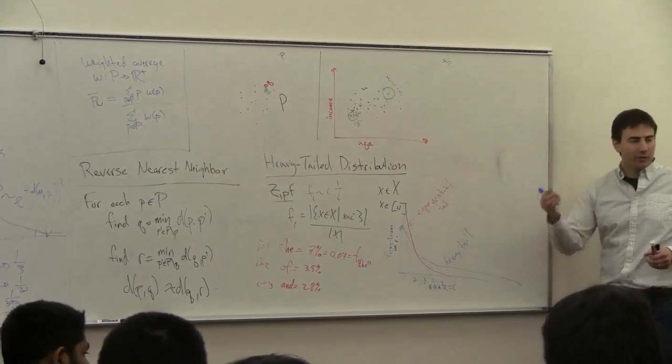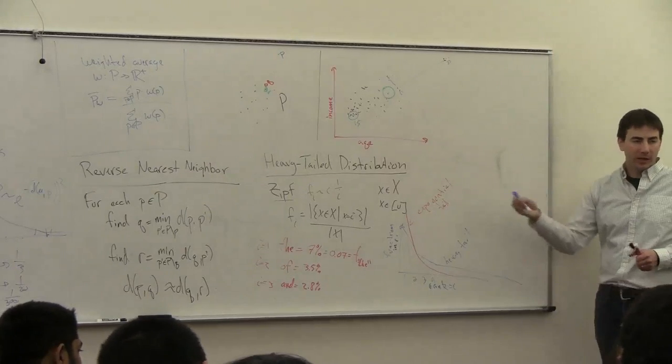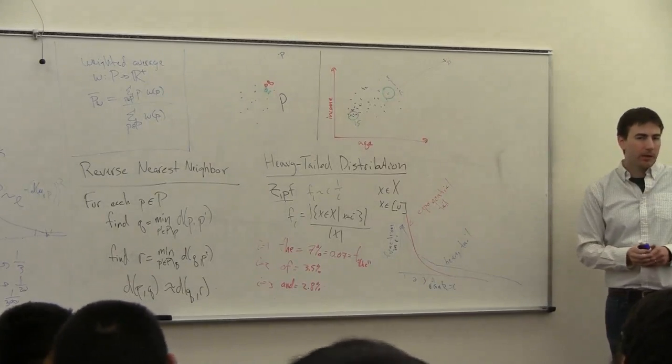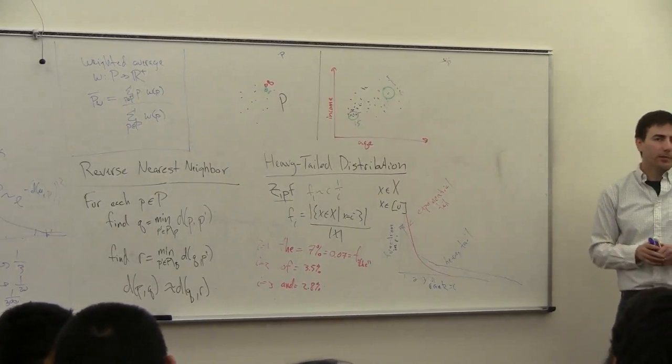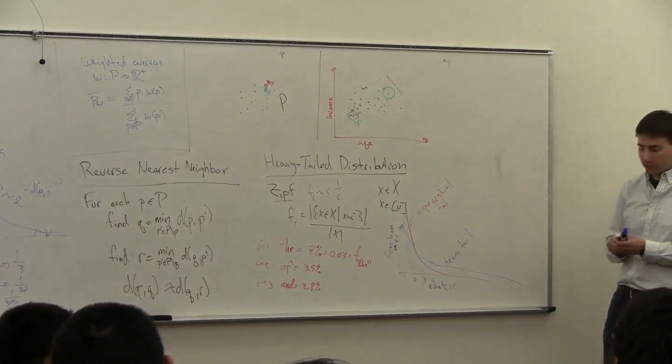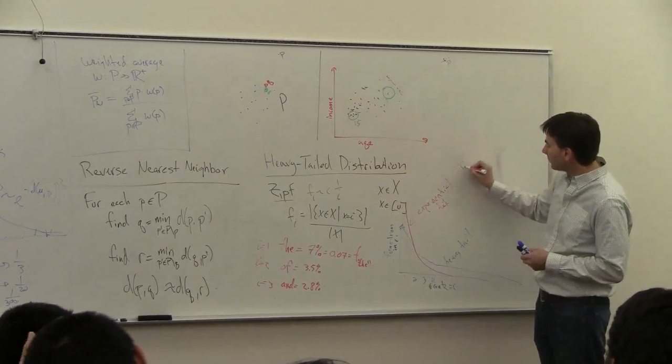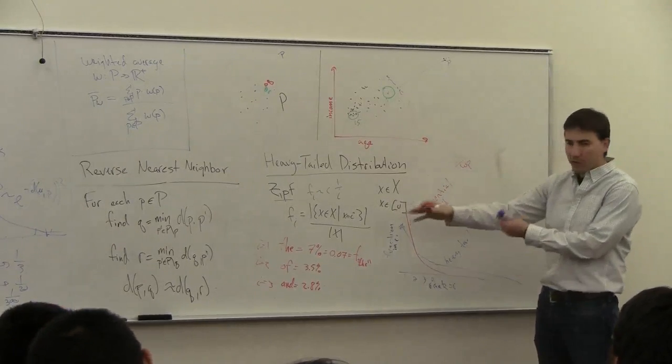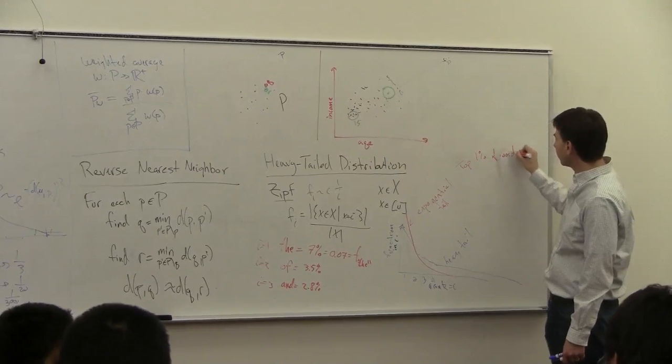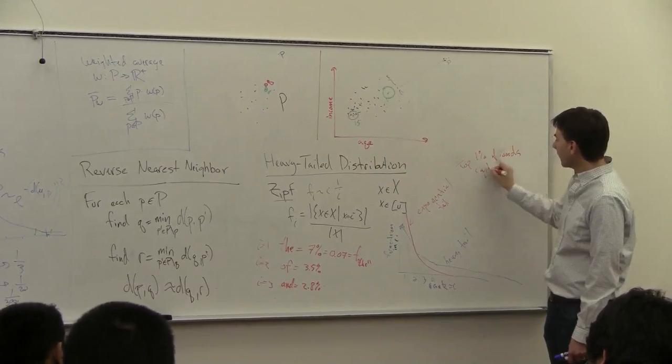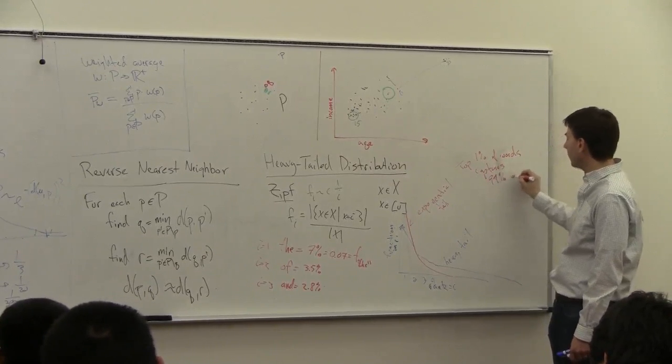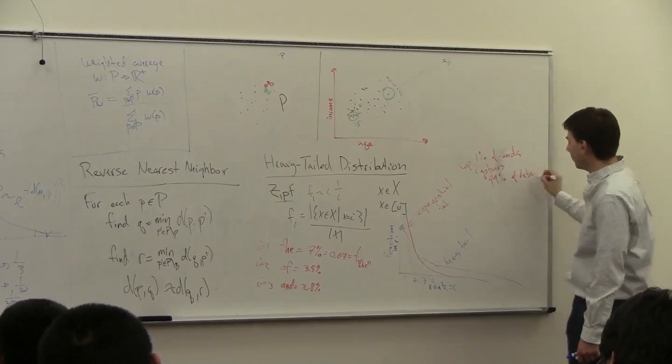So with the exponential tail, if you take the top, maybe 10% of the data, you probably capture maybe like 99% of the population, right? So maybe with words and maybe even more, top 1% of words captures something like 99 percent of data.